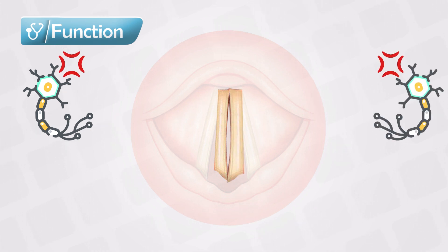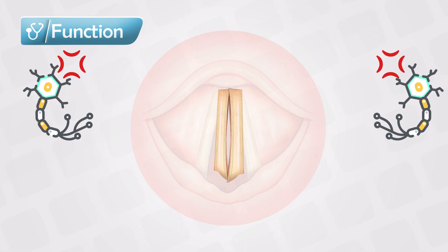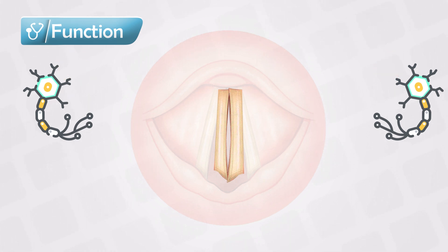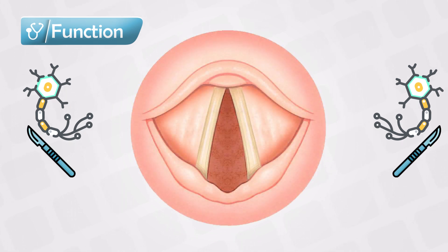In cases of bilateral recurrent laryngeal nerve damage, the vocal cords will close completely. On the other hand, if the nerve was severed or cut, the signal going both to the adductor and abductor will be lost, and so the vocal cord will remain in neutral position.